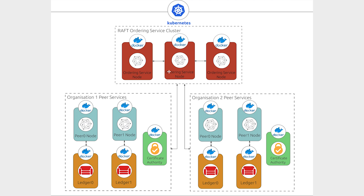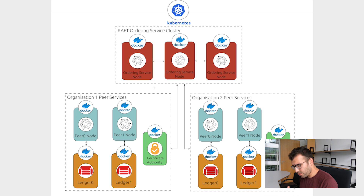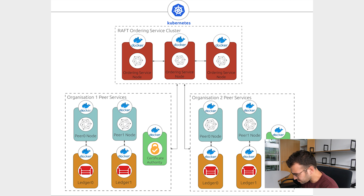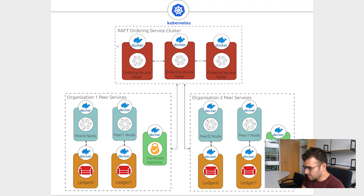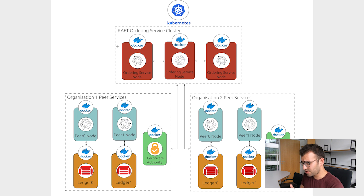Now that we have set up all the needed requirements, let's take a look at how Hyperledger Fabric components work. As you can see in the image, we have different components to deploy. We have to differentiate two main structures for Hyperledger Fabric. The first one is the ordering service, which is used by all entities and organizations participating in the network. The first structure uses a cluster of nodes using the Raft protocol, ensuring that every transaction committed to the blockchain is final and secure — the consensus guarantees that it does not fork the blockchain.